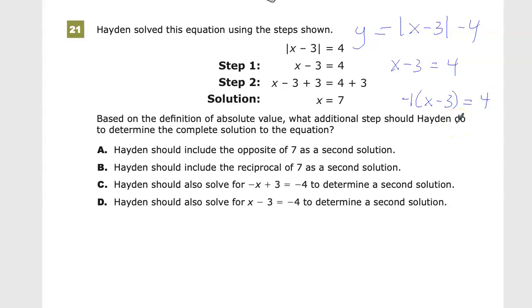What you might have been taught, and that's totally fine because it ends up getting you to the same place, is that you do x minus 3 is equal to 4, and x minus 3 is equal to negative 4. In this case, it gets you to the same place.